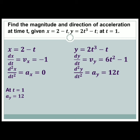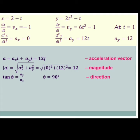Our acceleration vector is 12j, the magnitude is 12, and the direction is theta equals 90 degrees.